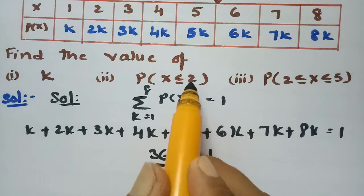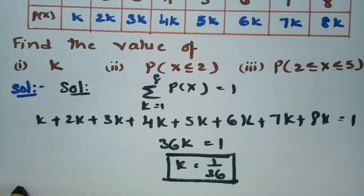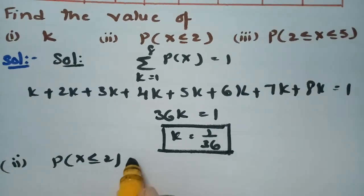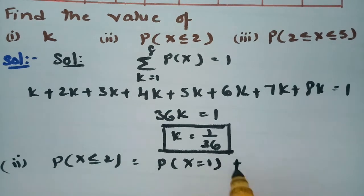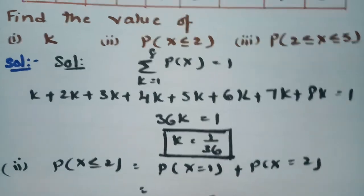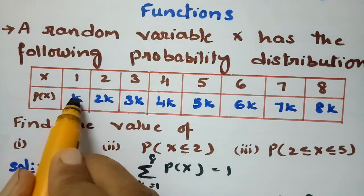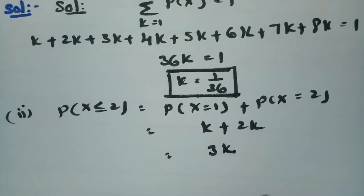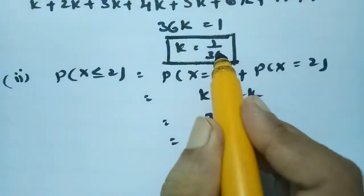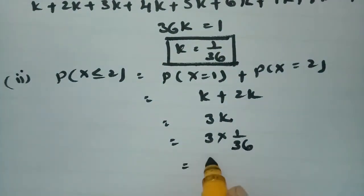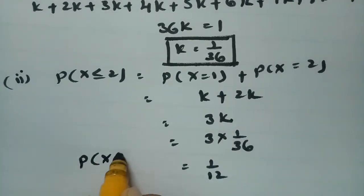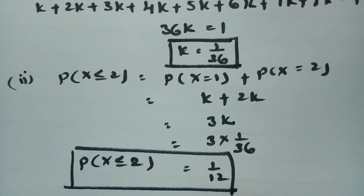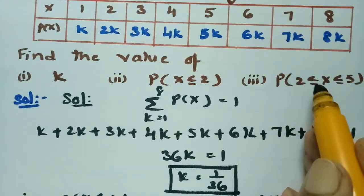After finding k, we need to find P(X ≤ 2). X less than or equal to 2 means P(X = 1) + P(X = 2), which is k + 2k = 3k. Substituting k = 1/36, we get 3 × (1/36) = 1/12. Therefore, P(X ≤ 2) = 1/12.